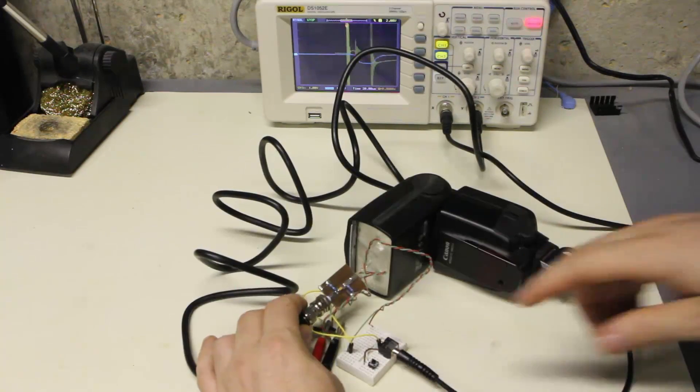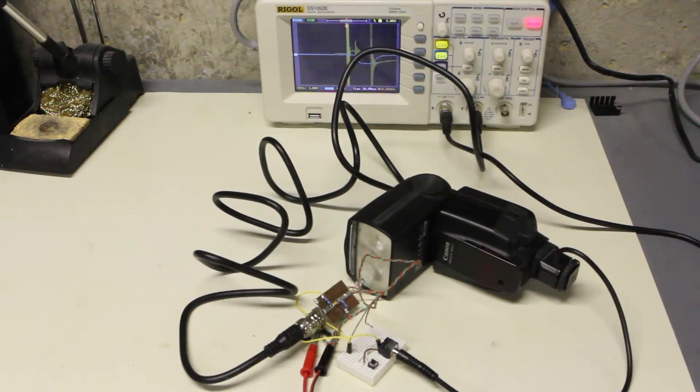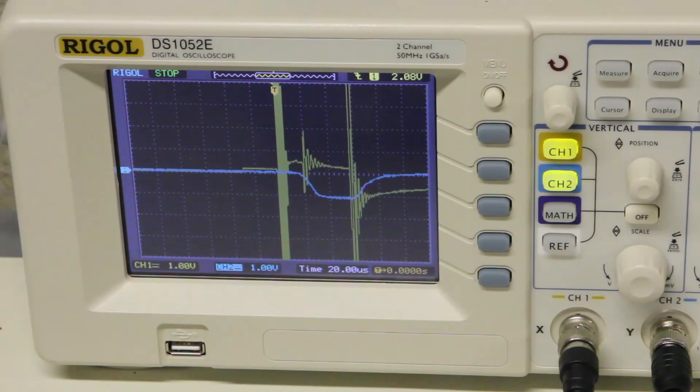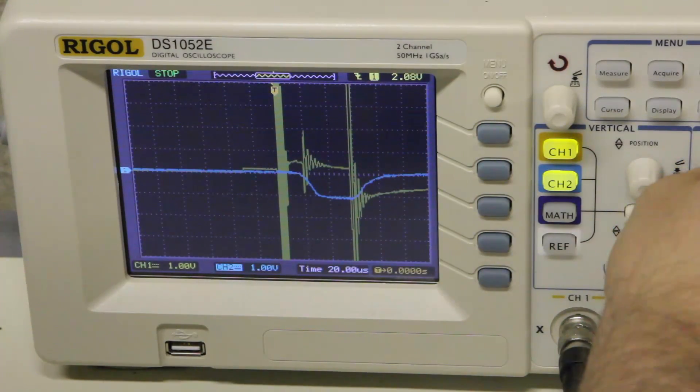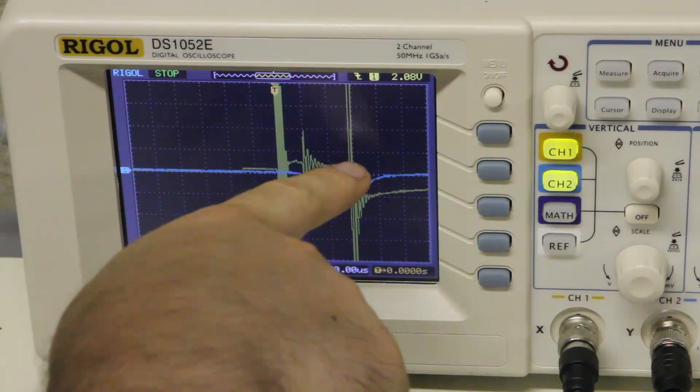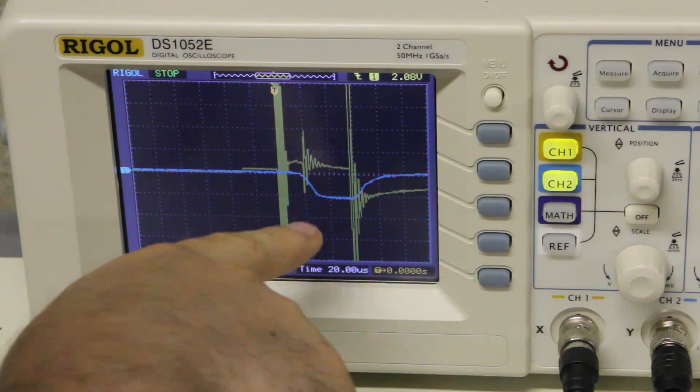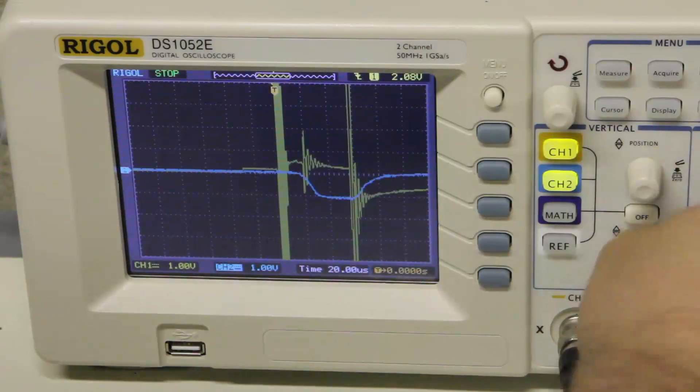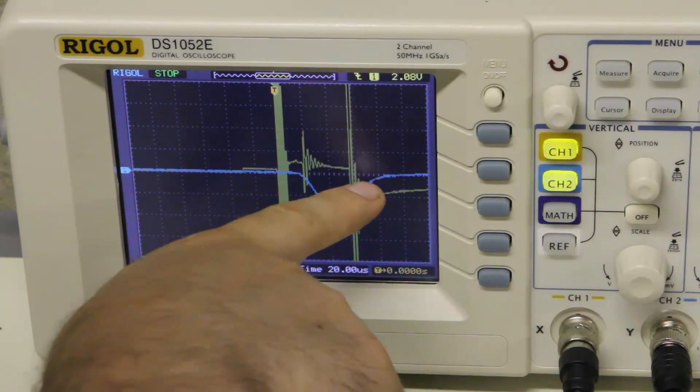I'll just trigger it. And there we've captured it. So let's see what we've got here. Pretty much ignore all of this up and down of the yellow. That's the voltage of the button with a lot of debounce. The blue line is the actual flash.